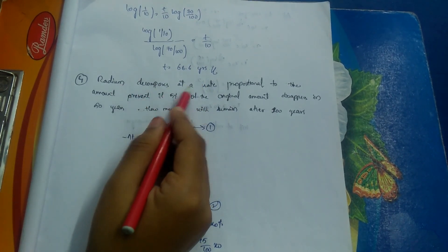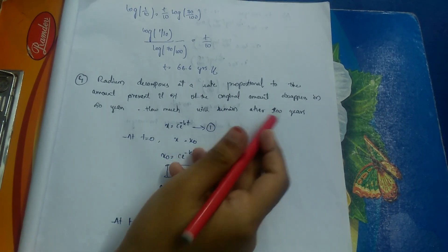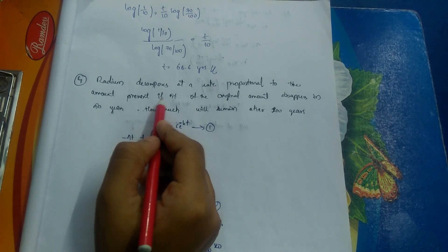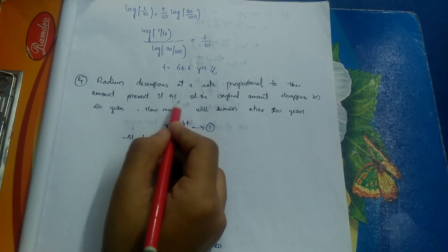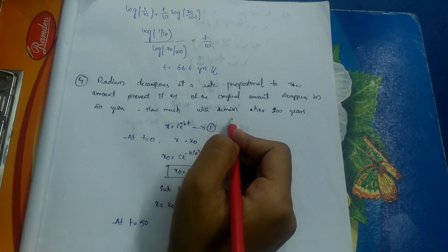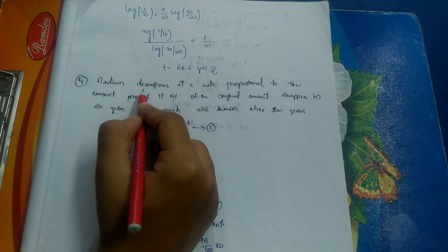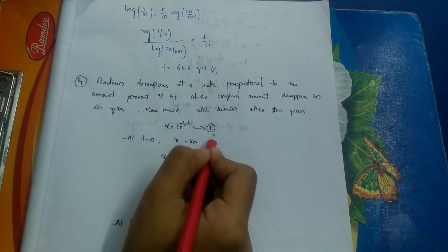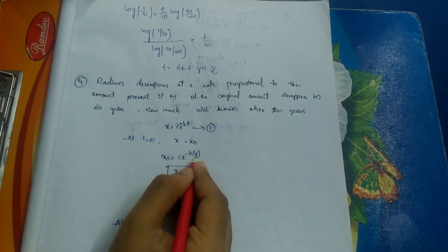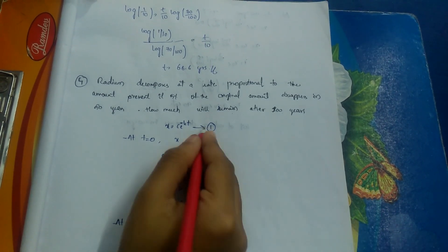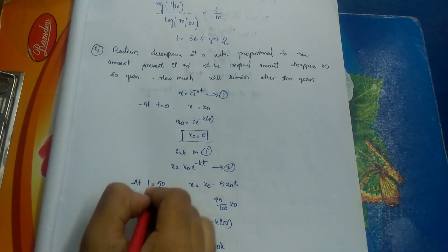Fourth question: radium decomposes at a rate proportional to the amount present. If 5% of the original amount disappears in 50 years, how much will remain after 100 years? Since it decomposes (decreases), by the law of natural decay: x = c · e^(−kt), equation 1. At t = 0, x = x₀ so c = x₀. Substituting: x = x₀ · e^(−kt), equation 2.